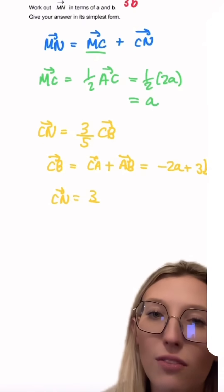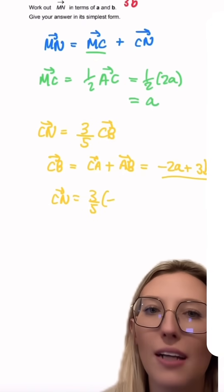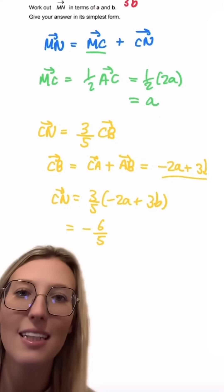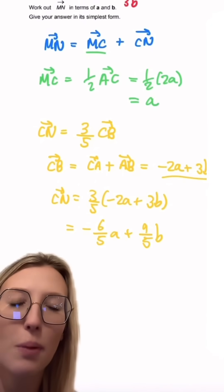So CN then is three fifths of this. So three fifths times by minus 2a add 3b and we're going to be left then with minus 6 over 5a add 9 over 5b.